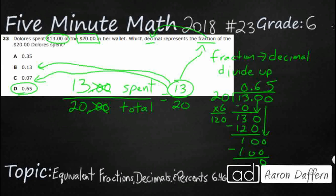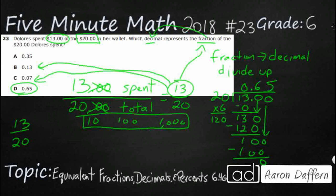Now, is there another way to do it? Yes — sometimes without any division you can find an equivalent fraction with a denominator of 10, 100, or 1,000. We like these denominators because tenths, hundredths, and thousandths are the three place values after the decimal point. For example, if we divide both 13 and 20 by 2, we get 6.5 over 10, which does equal 65 hundredths — though that's a bit awkward.